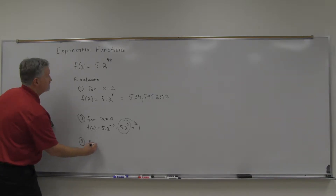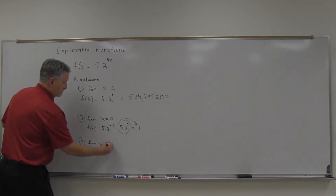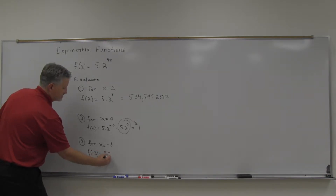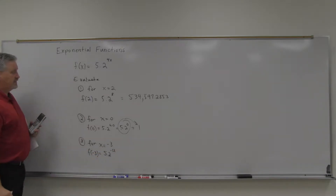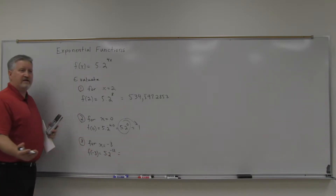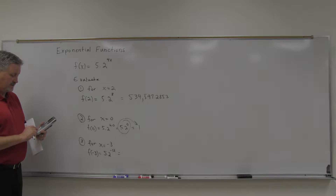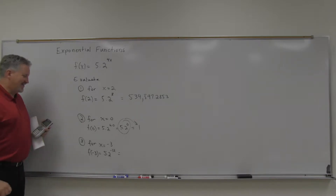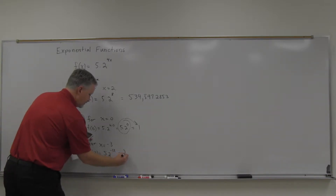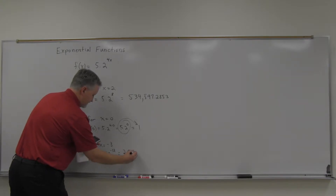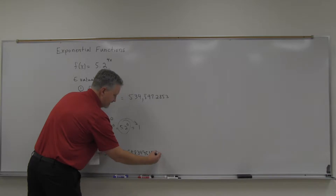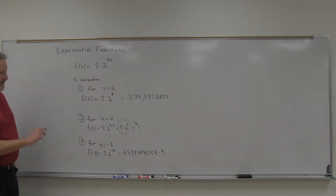Let's also evaluate for x = negative 3. That would be 5.2 to the negative 12. Is that going to give you a negative number? My calculator shows 2.5583495.15 — and the 'e' there stands for exponent, but it's scientific notation. Some calculators show it differently. This means times 10 to the negative 9 power, so it's really 2.5583495.15 times 10 to the negative 9.